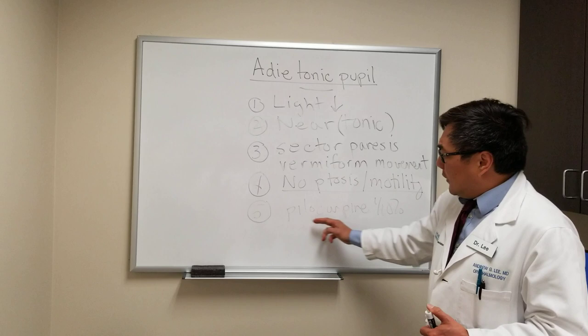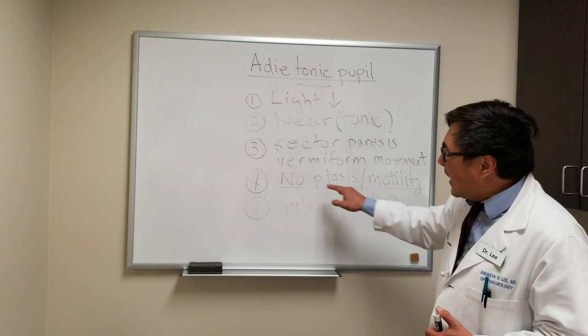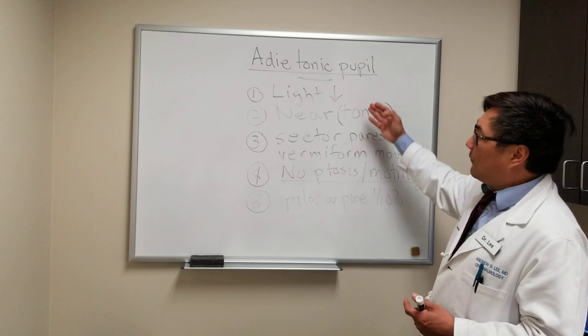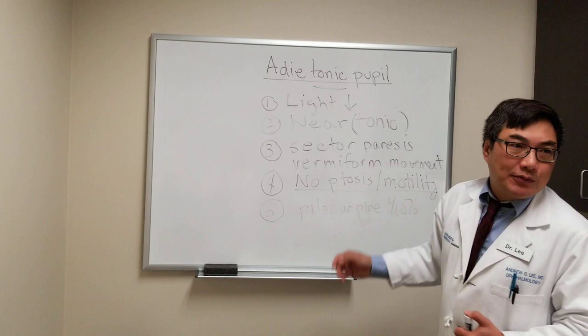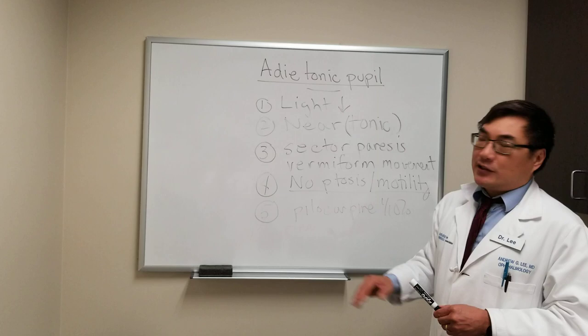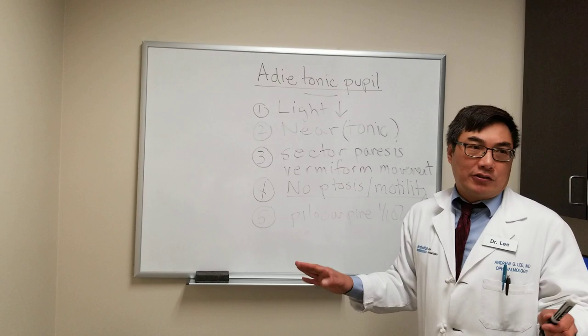The problem is it doesn't tell you where the denervation is. So we should not use the low-dose pilocarpine test alone to make the diagnosis of Adie's tonic pupil. That is a diagnosis made clinically based on light-near dissociation, the tonic near reaction, the sector paresis, and the absence of third nerve palsy. Denervation from a third nerve also produces supersensitivity, because denervation of any source produces upregulation of postsynaptic receptors.